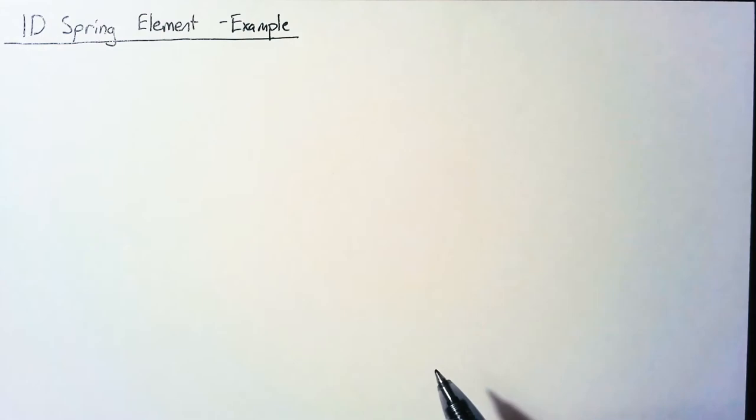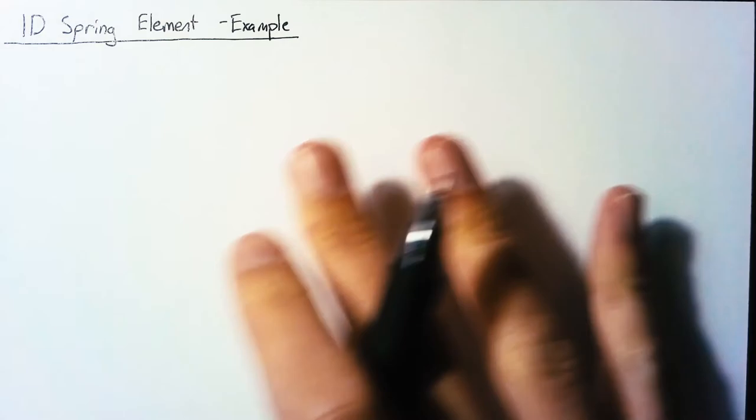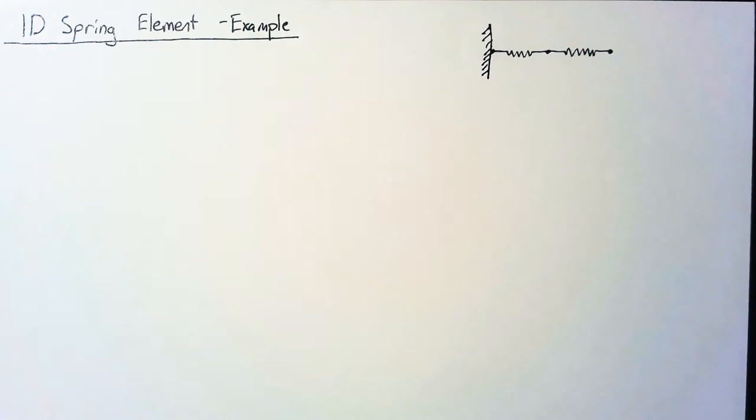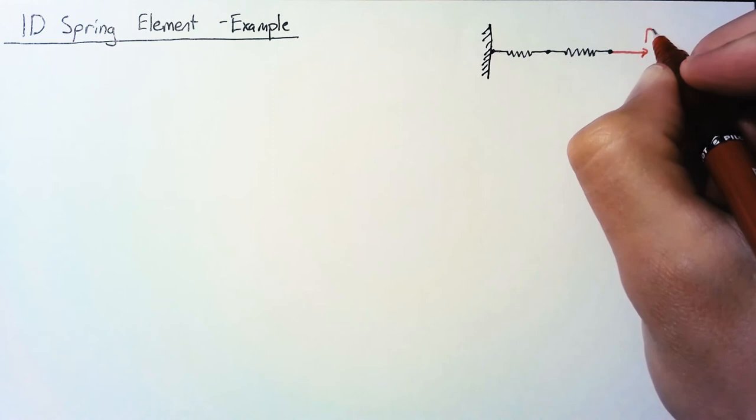To start off, let's look at the actual situation we're going to be calculating. We're going to have two springs connected to each other and also connected to a wall. On the opposite end of the wall, we're going to have some loading, which we're going to call a force P. For our system here, we're going to have three nodes and two elements, and each of those elements is going to have a separate stiffness.